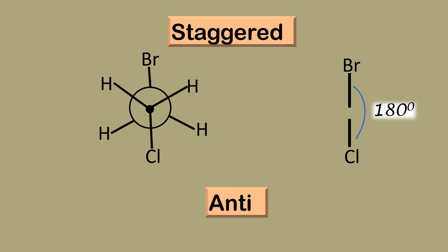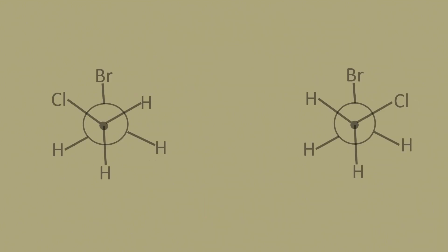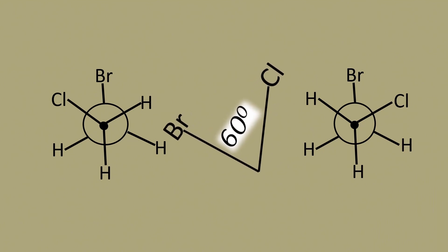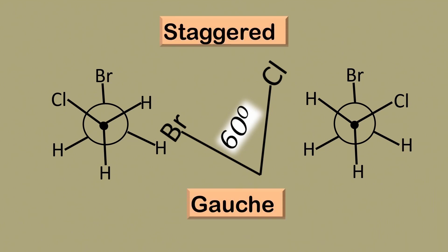As the bonds continue to rotate, the molecule achieves another conformation, in which case the heavy groups are at 60 degrees apart. This is still a staggered conformer, but it is the gauche type of staggered conformer.